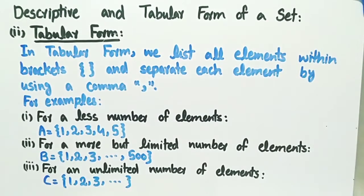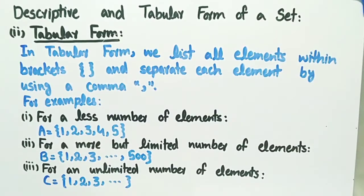Now let's see the examples. In example one, for a less number of elements, we have represented set A by a less number of elements that are one, two, five, written in curly brackets and separated by commas.